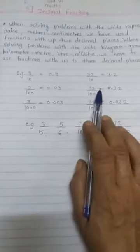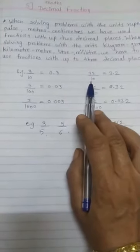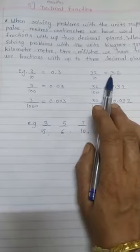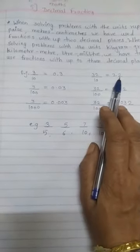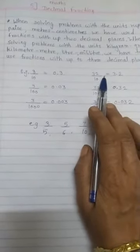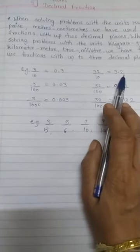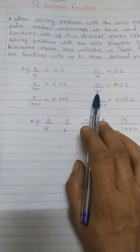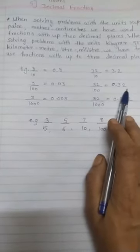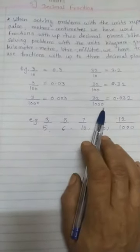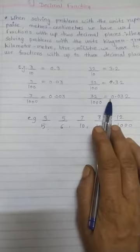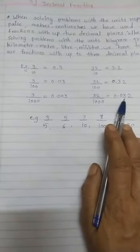Again one example here. 32 upon 10 is writing as, see after decimal point, one digit is there. So it is 3.2. 32 upon 100 is writing as 0.32. 32 upon 1000 is equal to 0.032.